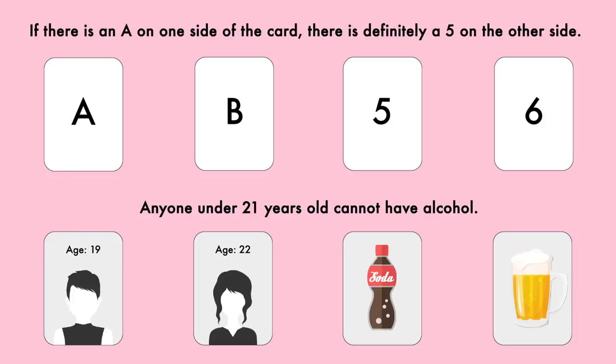Then the 5 does not need to be flipped over because it doesn't matter what's on the other side. If there is an A, then the rule is not broken, of course. On the other hand, if there's maybe a C behind it, the rule is still not broken because I only said if there's an A, then there must be a 5 behind it. Other letters don't matter.